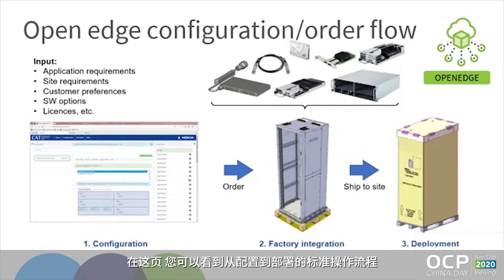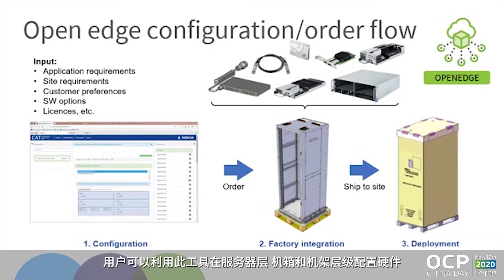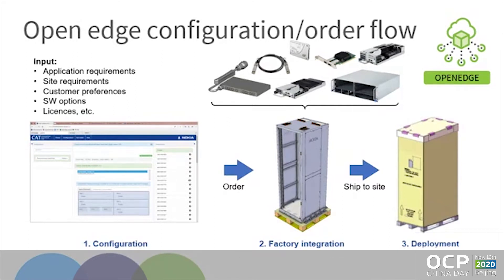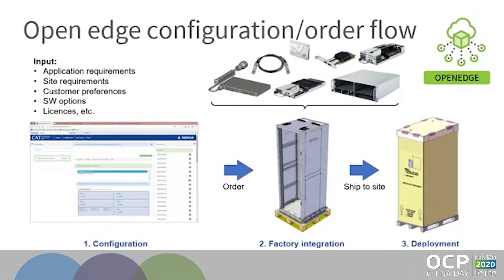On this slide you can see a typical flow of operations from configuration to deployment. On the left side there's a snapshot of Nokia's configurator tool, which allows the user to configure the hardware on server level, chassis level, and rack level. The typical inputs for configuration are application requirements — for example, the number of CPU cores, the amount of memory, the throughput of networking. But also site requirements are important, like what kind of power feed is supported on the site, what kind of environmental conditions, the space constraints, air flow direction, and so on.